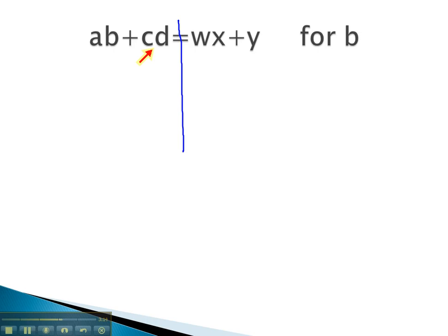Currently, cd is added to the b term. The opposite of plus cd is minus cd. We will subtract cd from both sides. Now, we have ab equals... Notice there are no like terms on the right side, so we just treat this as a long addition problem: wx plus y minus cd.